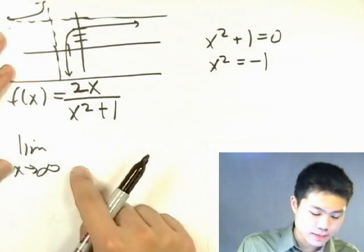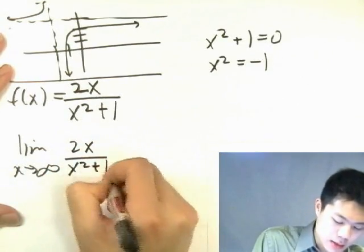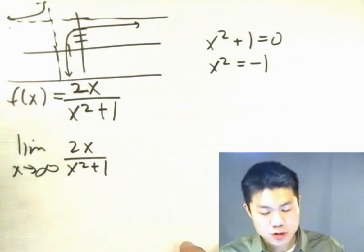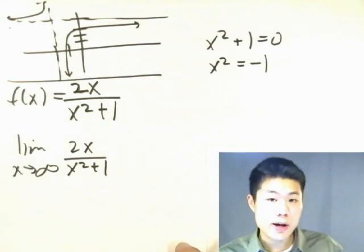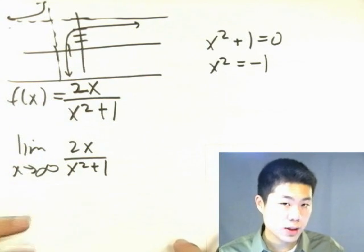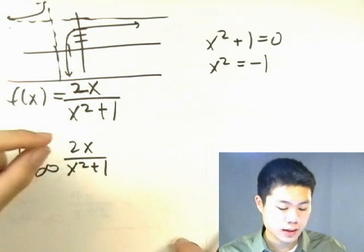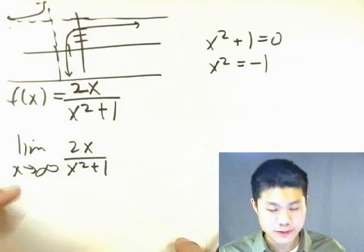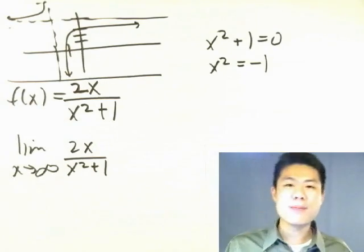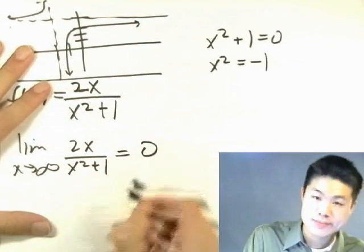Now let's take a look at the limits. At the extreme end, the degree of the denominator is larger than the degree of the numerator. Therefore, the bottom is going to approach infinity faster than the top. So the answer is going to be 0.